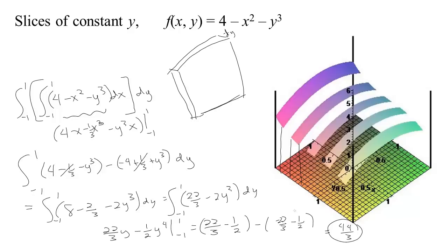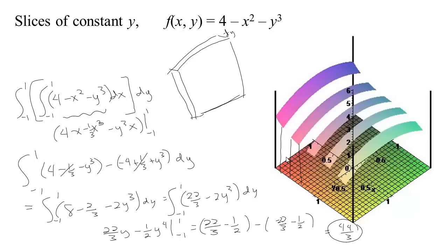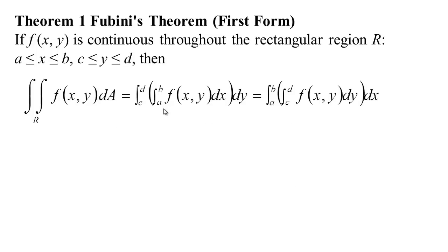The answer was the same both times: 44 thirds either way. This makes sense — it shouldn't matter how you slice your bread when calculating volume. Whether you add up slices from one direction or the other, you get the same result. This result is known as Fubini's Theorem, which takes two-dimensional integrals and relates them back to one-dimensional integrals. It says you just need to take the area of a face of a slice times its thickness and sum all the slices up, and it doesn't matter which way you cut it.